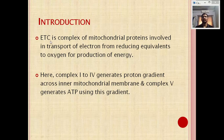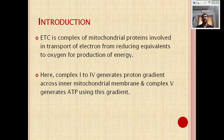Introduction: The electron transport chain is a component of mitochondrial protein involved in the transport of electrons from reducing equivalents to oxygen for the production of energy. Complexes 1 through 4 generate the proton gradient across the inner mitochondrial membrane, and complex 5 uses that gradient for ATP synthesis.